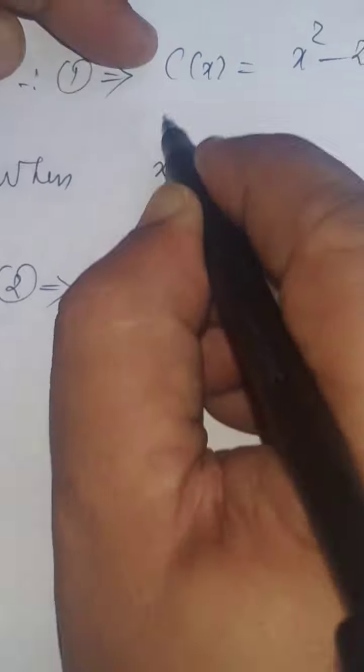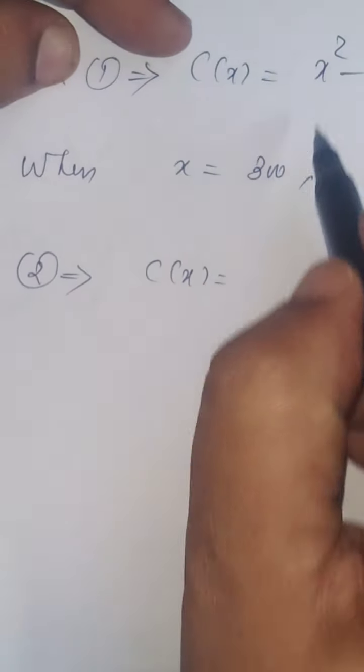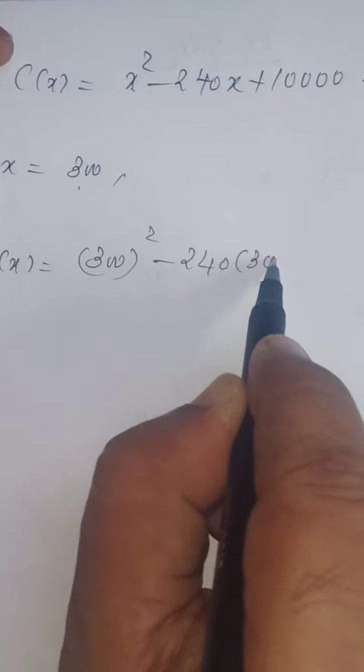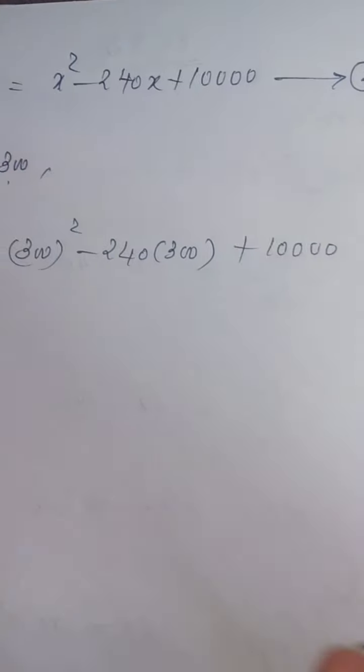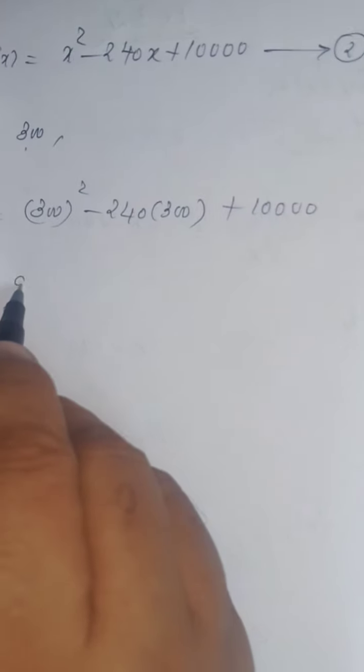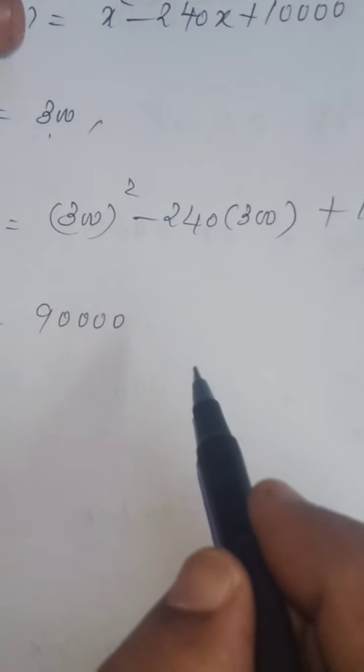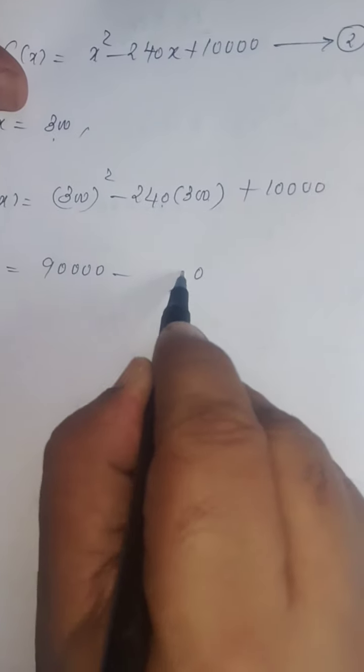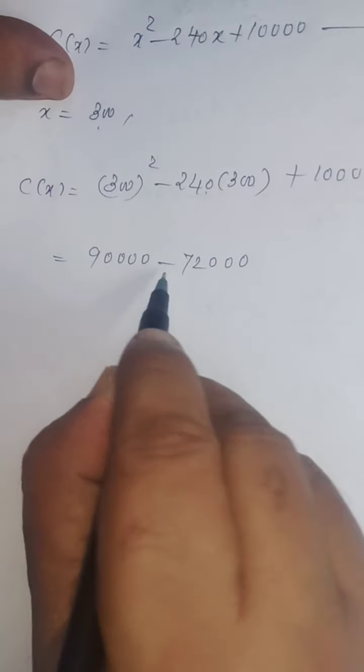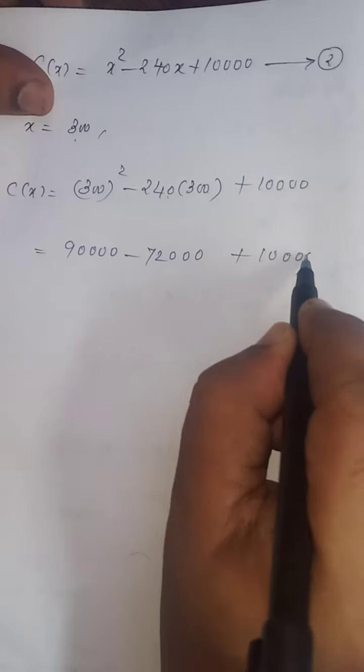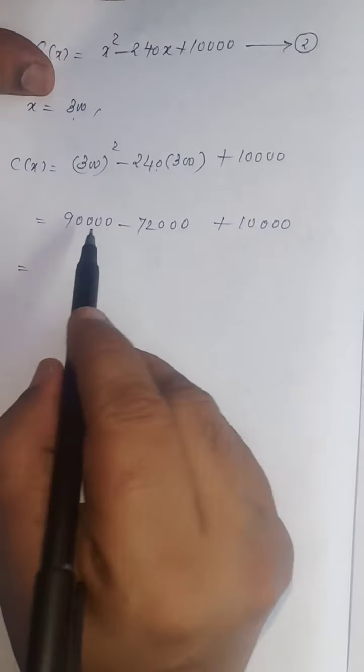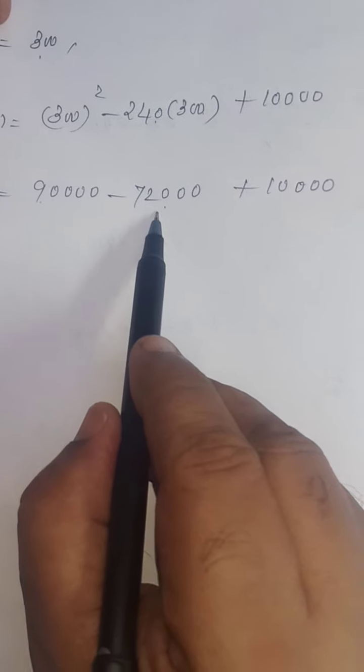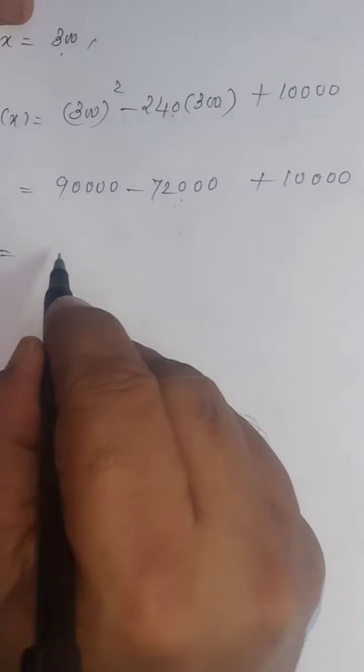Equation 2 implies C of X. You are asked to find out C of X. X can be replaced by 300. 300 square minus 240 into 300 plus 10,000. 300 square that is equal to 90,000 minus. Here 0, here 00, totally triple 0. 24 into 3 that is 72. So, 72,000 plus 10,000. Equals. 90,000 minus 72,000 that is equal to 18,000. 18,000 plus 10,000 equals 28,000.